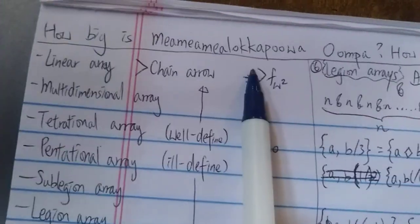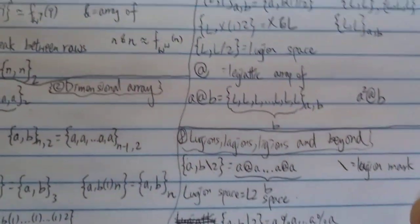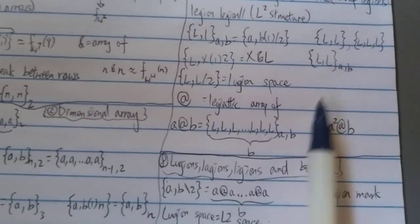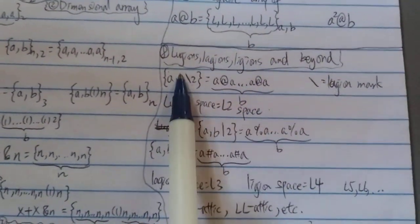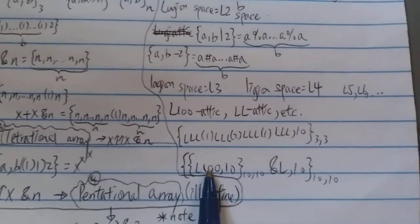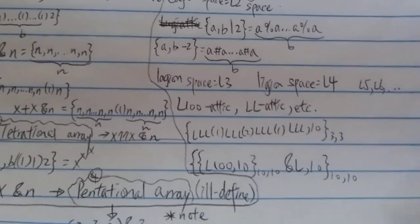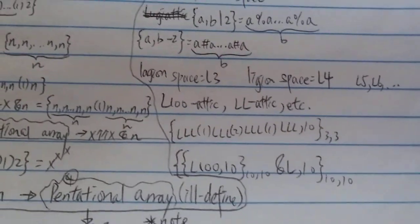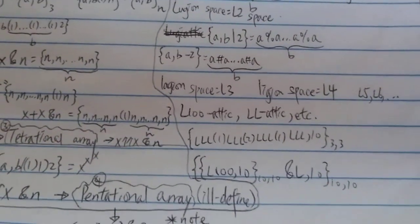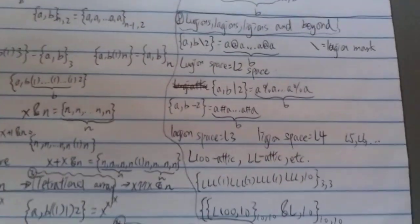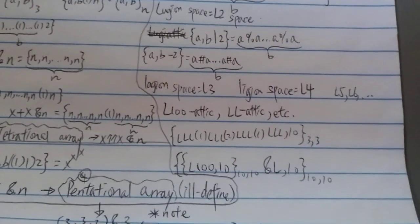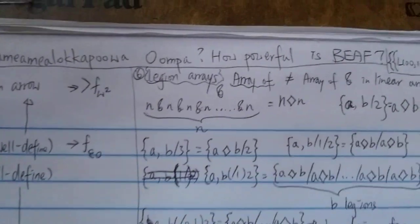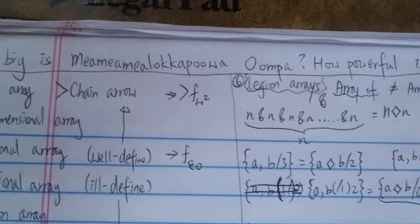It's unbelievably huge and unbelievably crazy. The linear array level is already way beyond chain arrows. TREE(3) and SCG probably lie somewhere in the legion array notation. If this is well-defined, I would say this number is way way way bigger than TREE(3), way way bigger than even SCG(13), but it is smaller than Loader's number — because Loader's number uses the calculus of constructions, which is supposed to be stronger, and is kind of like a weak version of the Busy Beaver. Anyway, thanks for watching and have a nice day.